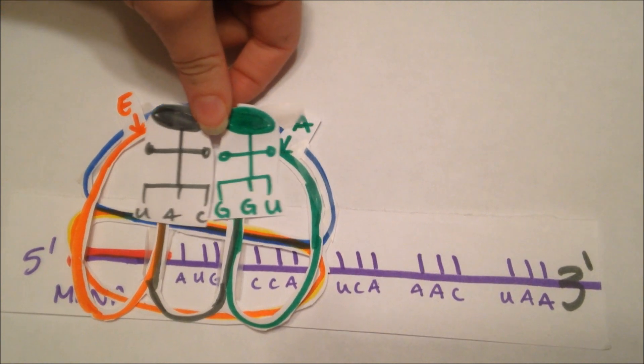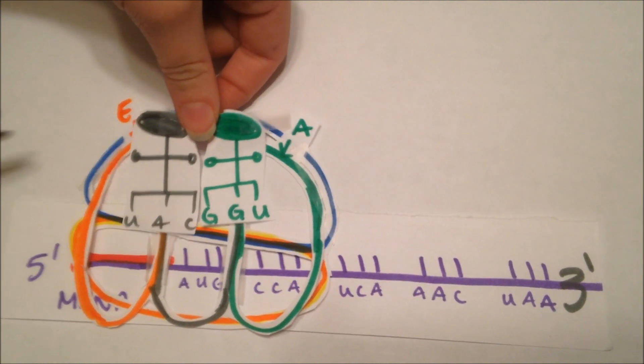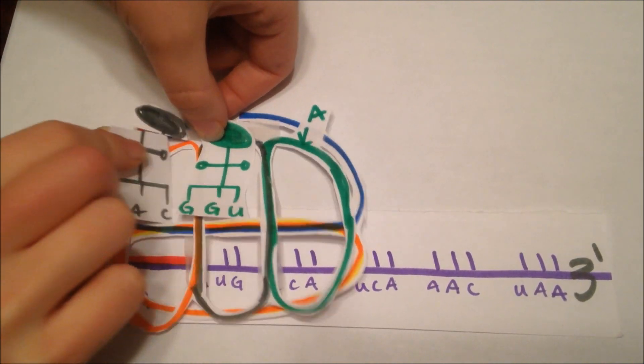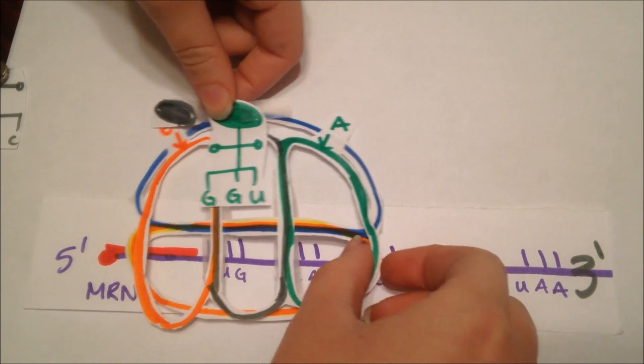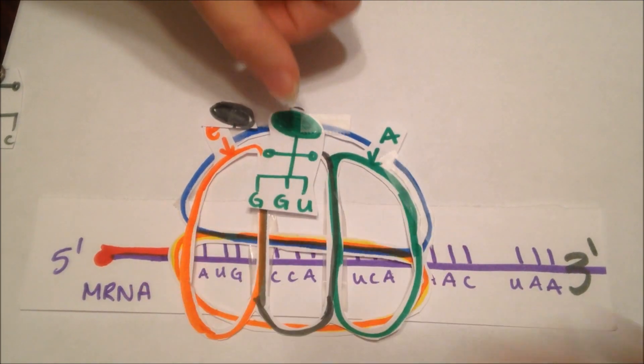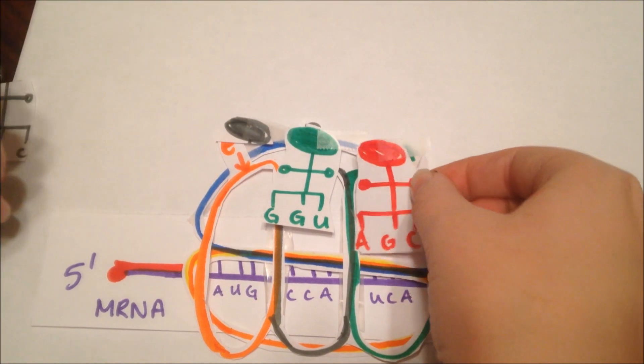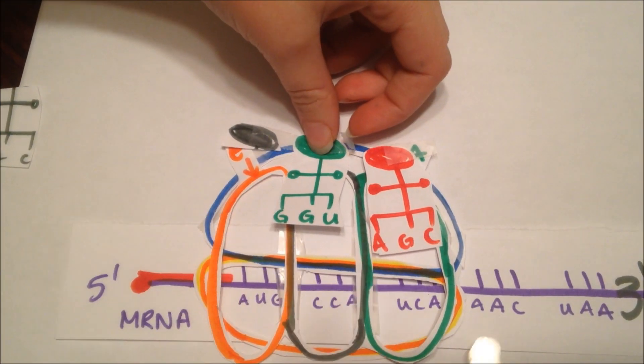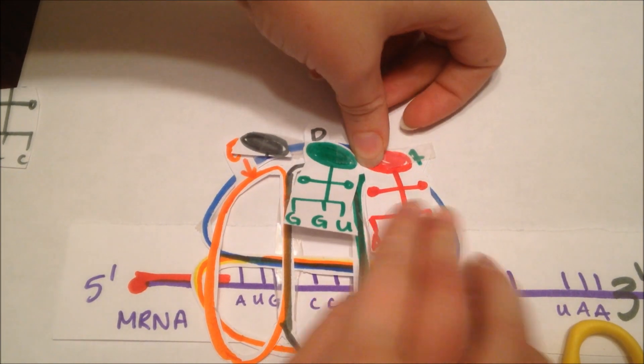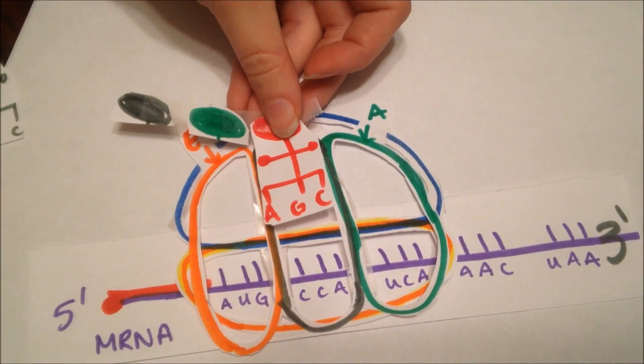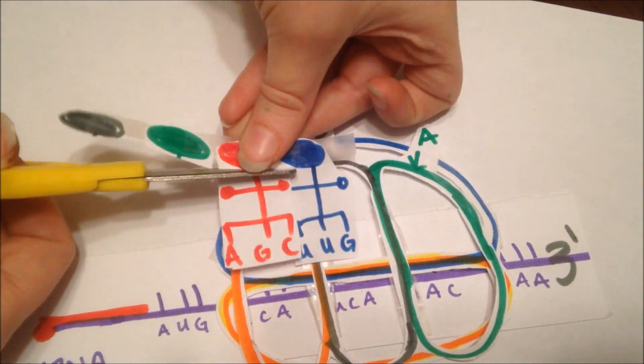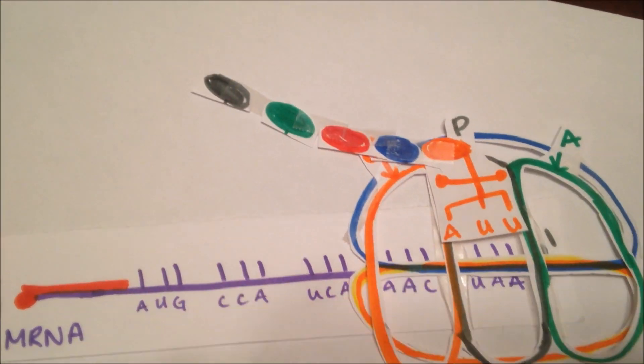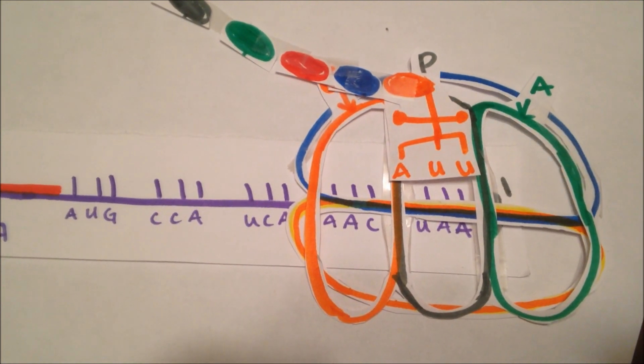The first tRNA exits as the ribosome slides towards the three prime end of the mRNA into the e-site, and then the one that was once in the a-site gets moved to the p-site as a new tRNA molecule enters into the a-site. The new amino acid on the tRNA molecule in the p-site gets transferred to the new amino acid in the a-site, with the help of the peptidyl transferase, forming yet another peptide bond, and the process continues like this, forming a polypeptide chain until a stop codon is reached.